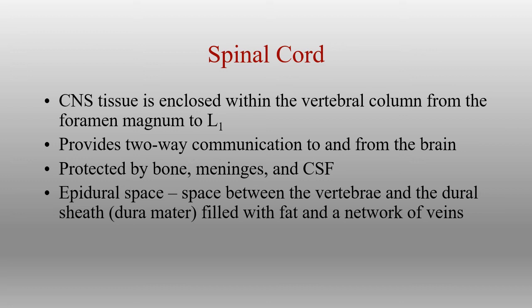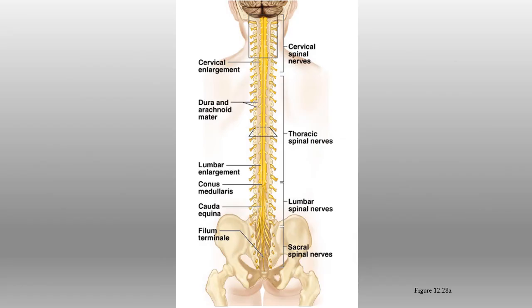Similar to the brain, the spinal cord has the same meninges: dura mater, arachnoid, and pia mater. It's protected by bone, a relatively large amount of muscle, and CSF inside. The actual cord begins at the foramen magnum, comes down to about L1, and ends at that point.